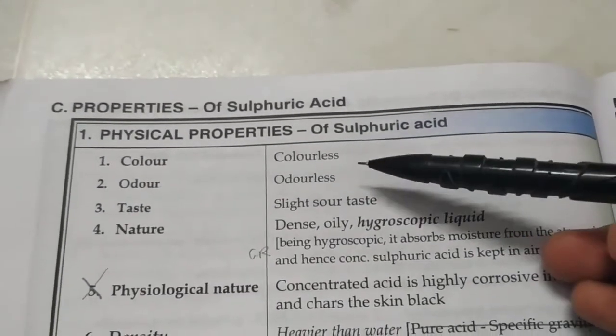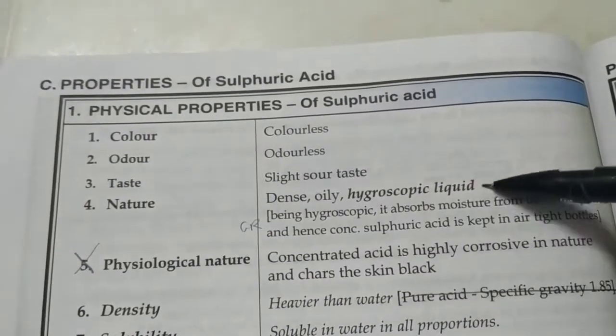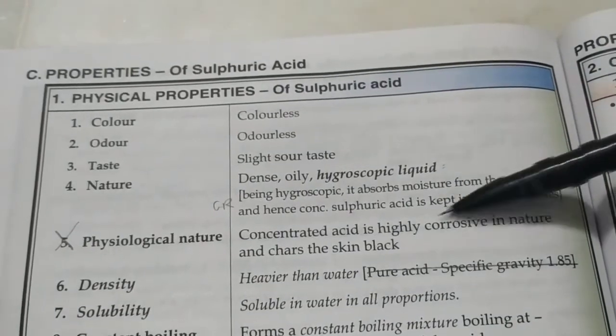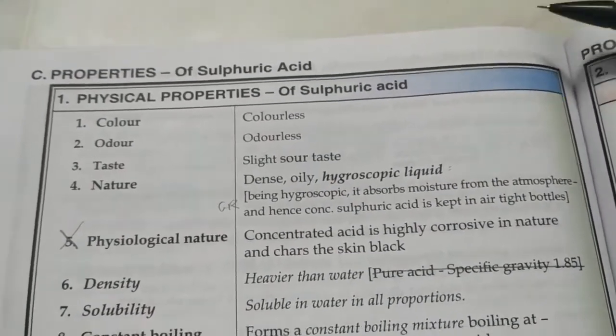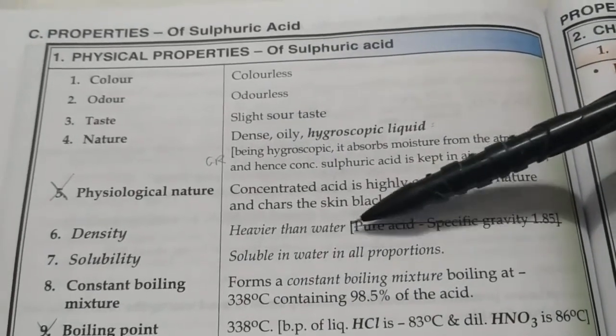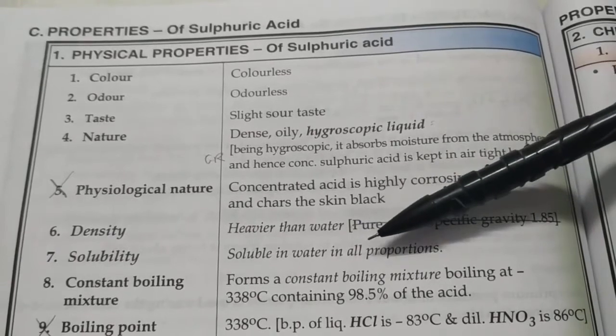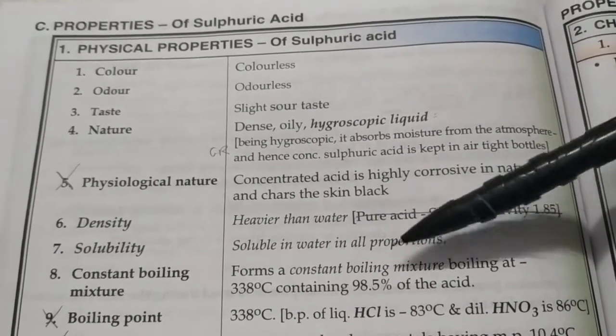Physical properties: colorless, odorless, slightly sour to taste. Nature: it's a dense oily hygroscopic liquid, means it absorbs moisture without changing its state. That's why it should be kept in tight bottles, otherwise the conc sulfuric acid will become dilute. Density: it's heavier than water. Solubility: it is soluble in water in all proportions.